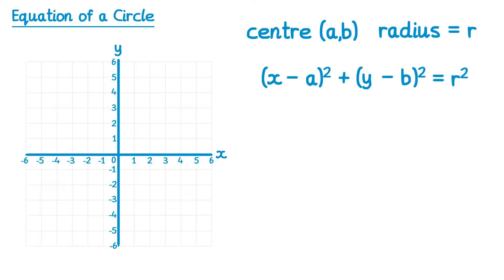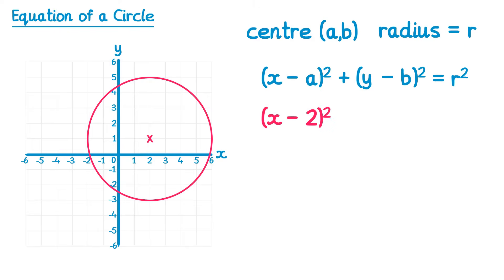Let's try and find the equations of some different circles. Starting with this one where the center is at (2, 1): the x coordinate of the center is two so we do (x minus 2) all squared, and then we add (y minus 1) all squared equals r squared, and the radius of this one is four, so it's four squared which equals 16.